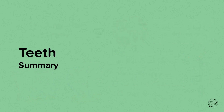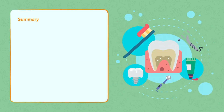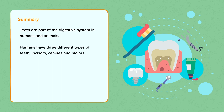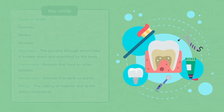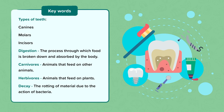In summary, we know that teeth are part of the digestive system for animals. Humans have three types of teeth: incisors, canines and molars. Different animals will have different numbers of these types of teeth depending on the type of food that they eat. And we must look after our teeth to prevent bacteria from causing tooth decay. The key words we used were: canines, molars, incisors; digestion — the process of breaking down food; carnivores — animals that feed on other animals; herbivores — animals that feed on plants; and decay — the rotting of material due to the action of bacteria.